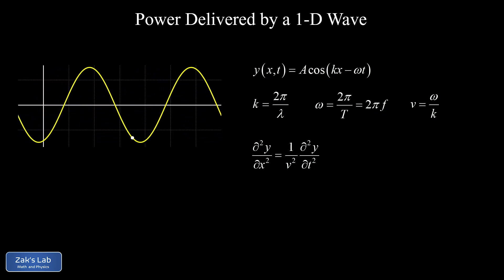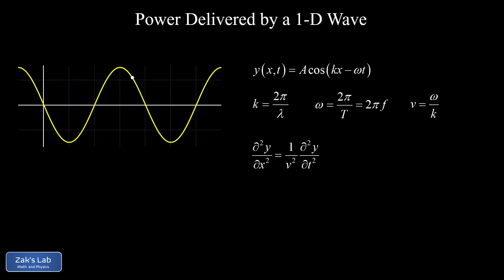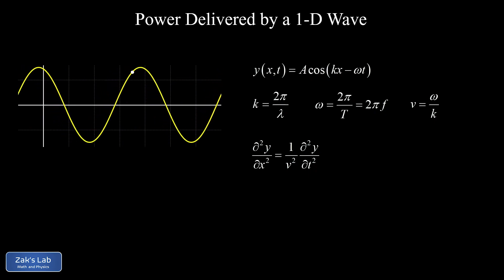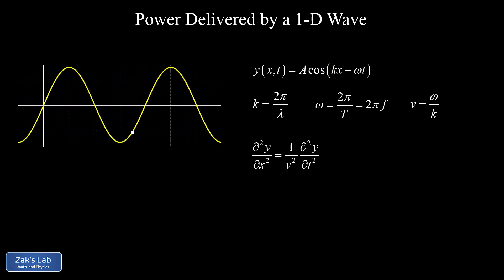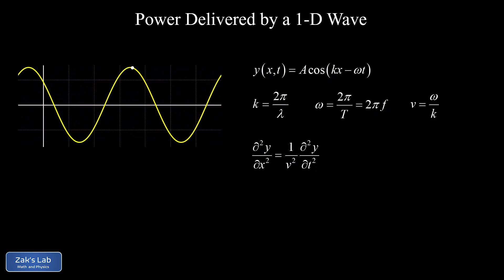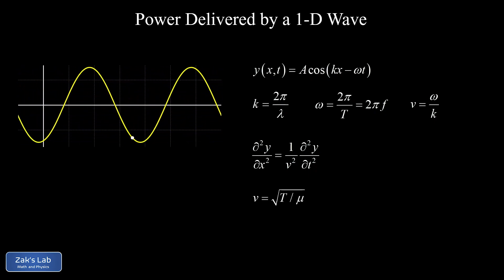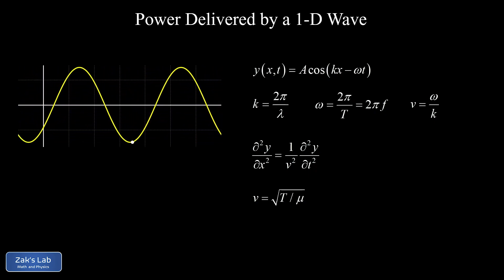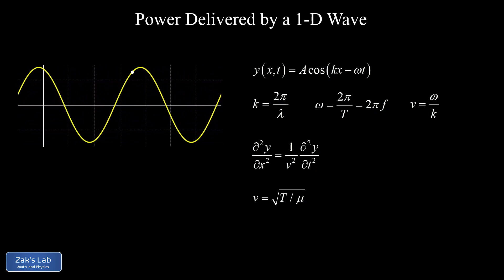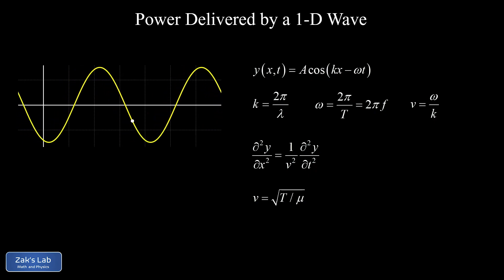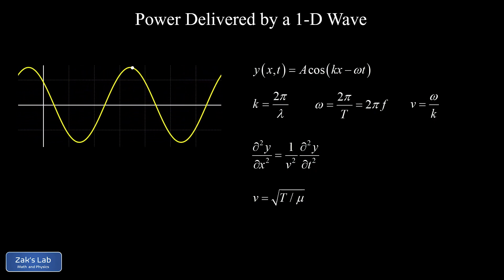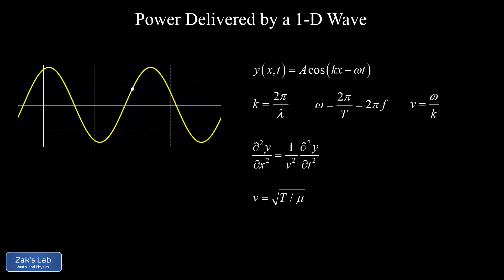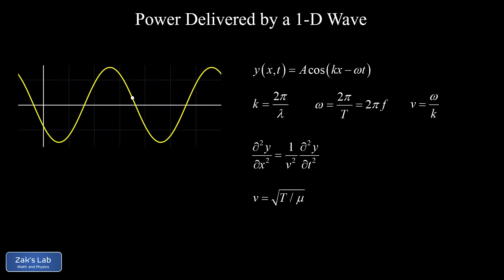In the third video, we used Newton's second law to derive the one-dimensional wave equation from first principles. An important fact emerged: how to relate the wave speed to the physical parameters — the tension on the string and the linear density. So the wave speed equals the square root of tension divided by linear density, √(T/μ).